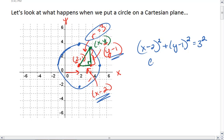And for this circle, I had a center at 2, 1, and a radius of 3. Let's look at another example.